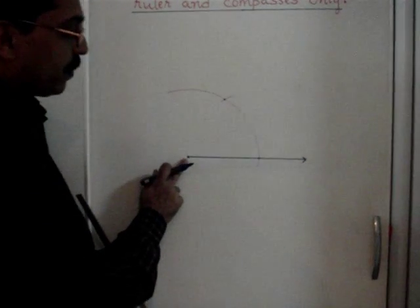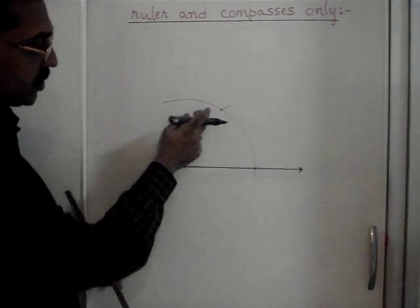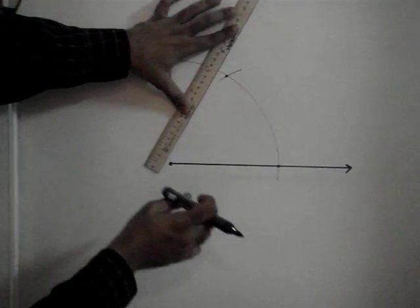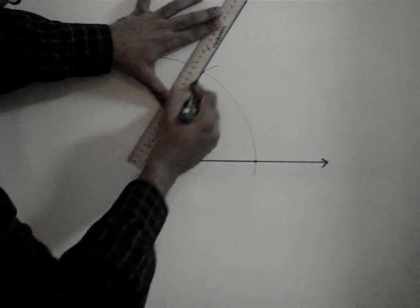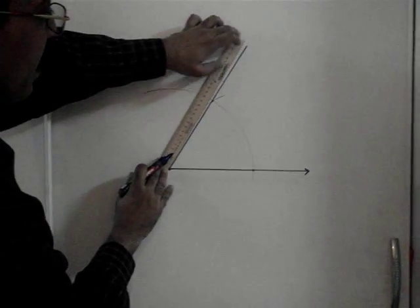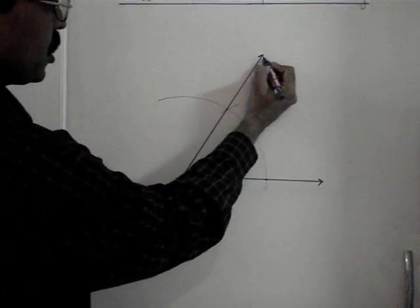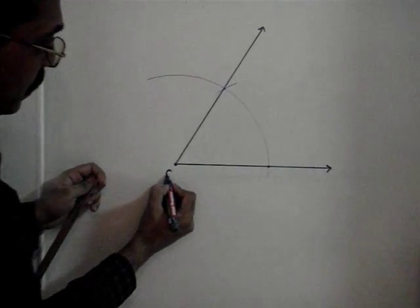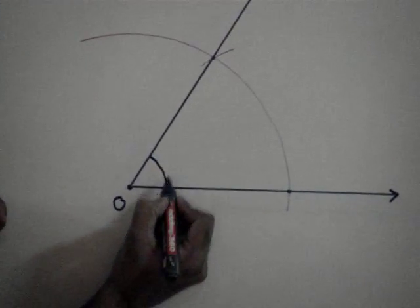Now we join the end point of the ray to this intersection point with the help of a ruler. So the angle formed at this particular corner gives the measure of 60 degrees.